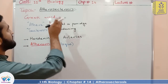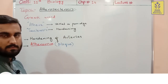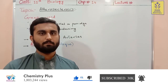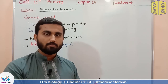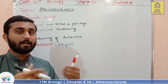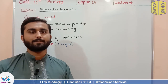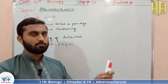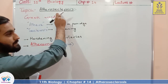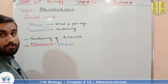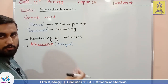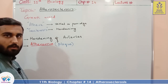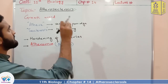Next is atherosclerosis. These are actually the blood vessel disorders, may be called cardiovascular disorders. When we say cardiovascular, it consists of two words: cardio, related with heart, and vascular, related with blood vessels. The other terminology used is atherosclerosis as well as arteriosclerosis — both have the same meanings.